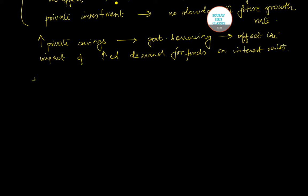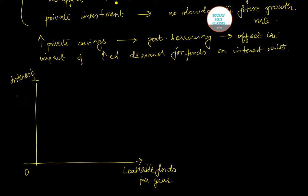So let us draw a two-axis diagram because we will show this graphically. Here on the horizontal axis I'll be measuring loanable funds, and this is per year.